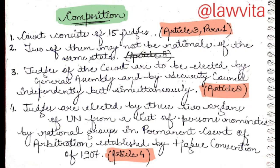The nominations come from national groups in the Permanent Court of Arbitration, which was established by the Hague Convention of 1907. The General Assembly and Security Council elect from a list of persons nominated by those national groups in the Permanent Court of Arbitration.